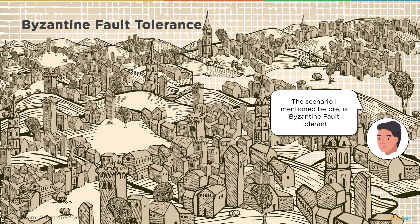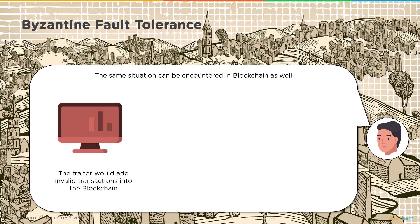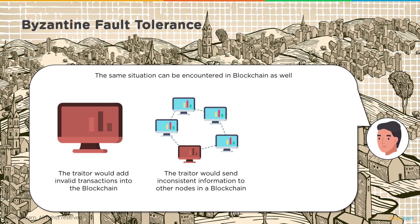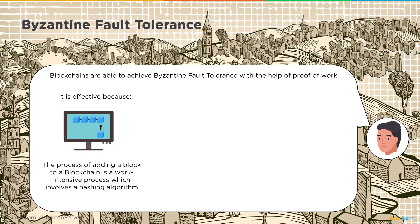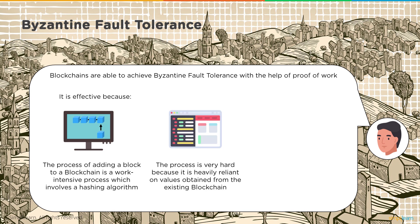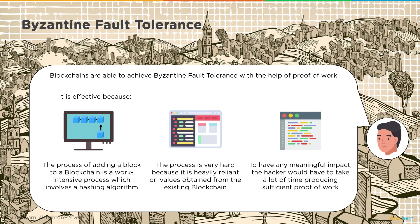This scenario is Byzantine fault tolerant — the majority of lieutenants follow the general's command and the attack succeeds. The same situation can be encountered in blockchain: a traitor could add invalid transactions or send inconsistent information to other nodes, affecting the reliability of the network. Blockchains achieve Byzantine fault tolerance with proof of work. Adding a block is a work-intensive process involving a hashing algorithm, heavily reliant on values from the existing blockchain, making it very difficult for a hacker to have any meaningful impact.